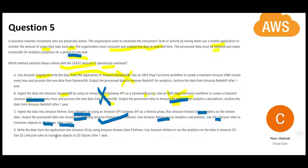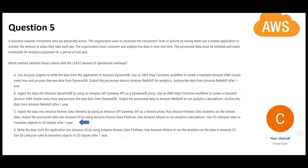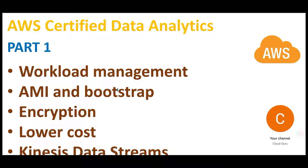Option C: use Kinesis Data Streams for near-real-time ingestion, run Kinesis Data Analytics directly on the stream, store output in S3, use Athena for further analysis, and use S3 lifecycle rules to transition objects to Glacier after one year — since Glacier is much cheaper for long-term retention. Option D writes directly from the app to S3 without any stream processing. Option C is better because it massages the data through analytics on the stream before storing. The answer is C. Please hit subscribe and like.